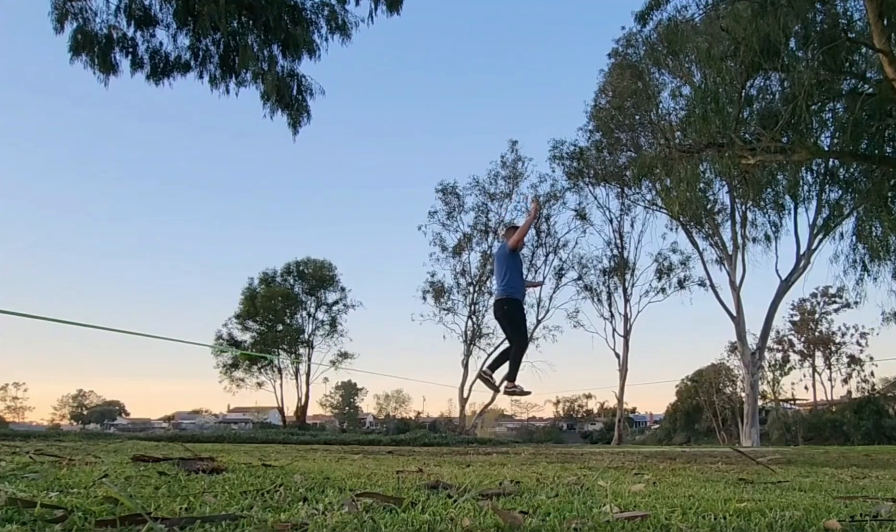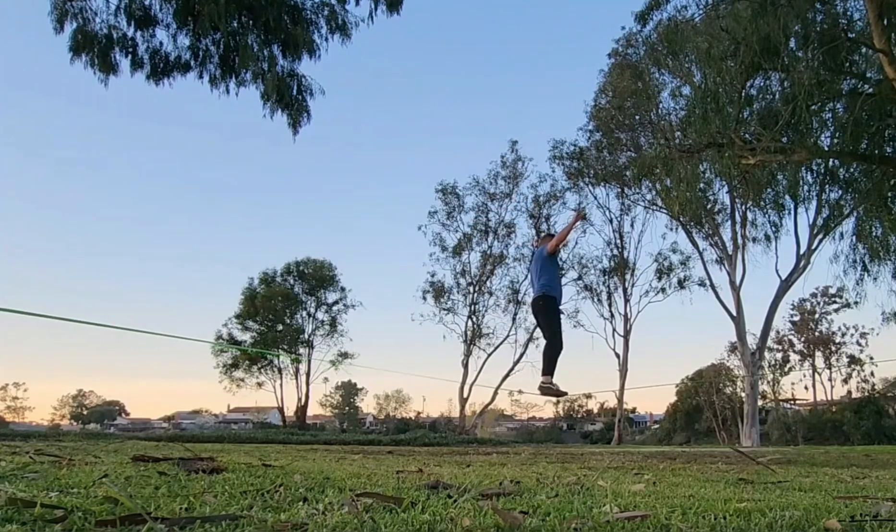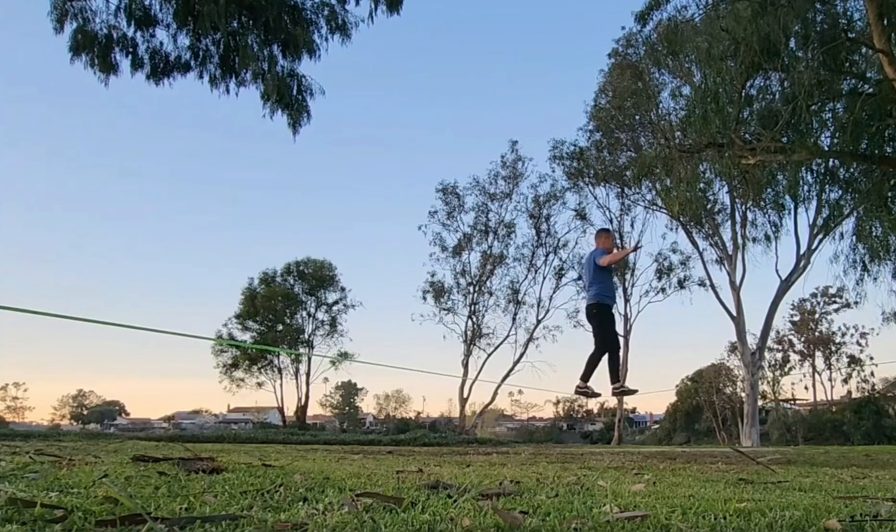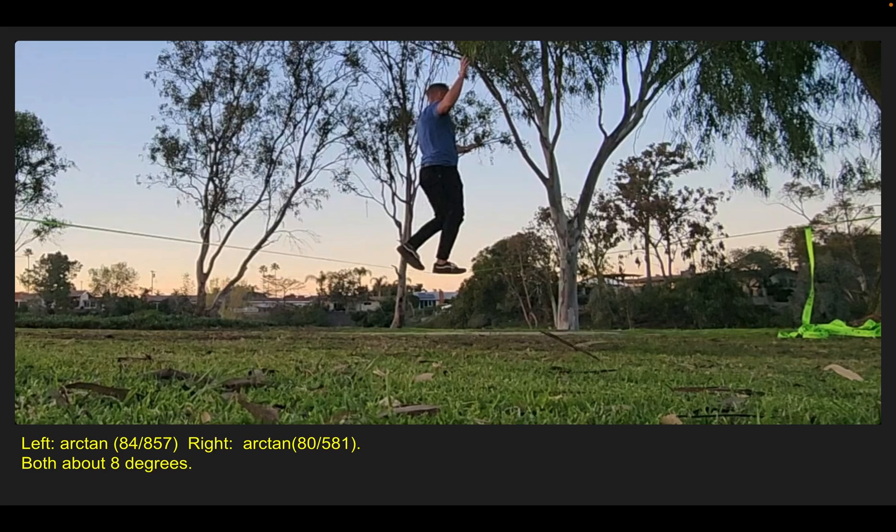When you're walking a slackline, you try to stay pretty loose and flowy, keep your arms and knees bent, and stay relaxed. Here's a physics teacher in the middle of a slackline. We're going to calculate the tension in the slackline when the physics teacher is right here.